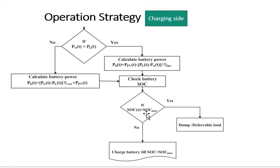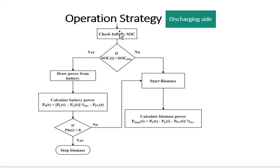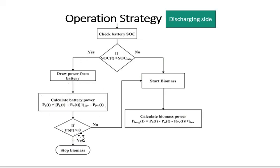On the discharging side, if solar and wind power are inadequate and batteries are also not able to produce the desired power to meet the load demand, then the biomass gasifier supplies power to the load. However, if the batteries have sufficient capacity to meet the deficient load, energy will be taken from the batteries. If at any stage the battery SOC is below the threshold and the gasifier has sufficient surplus power, the battery will be charged from the gasifier.